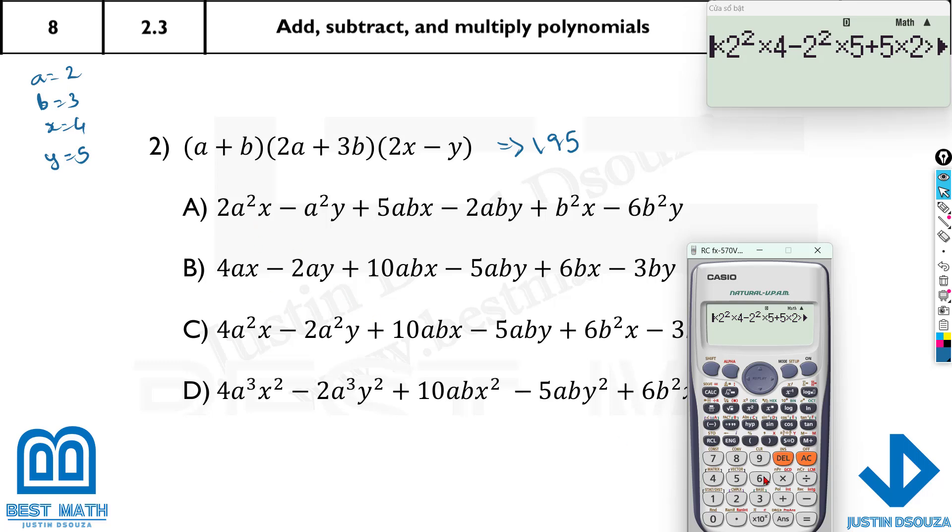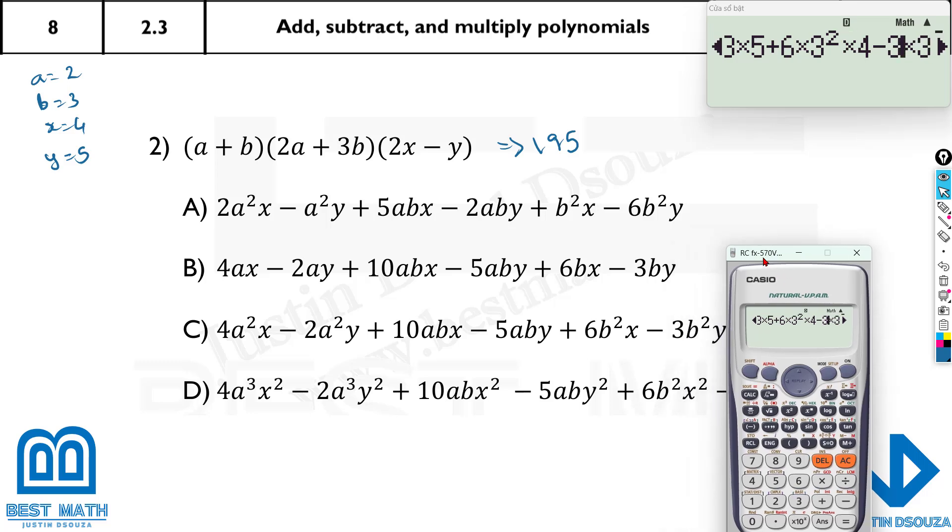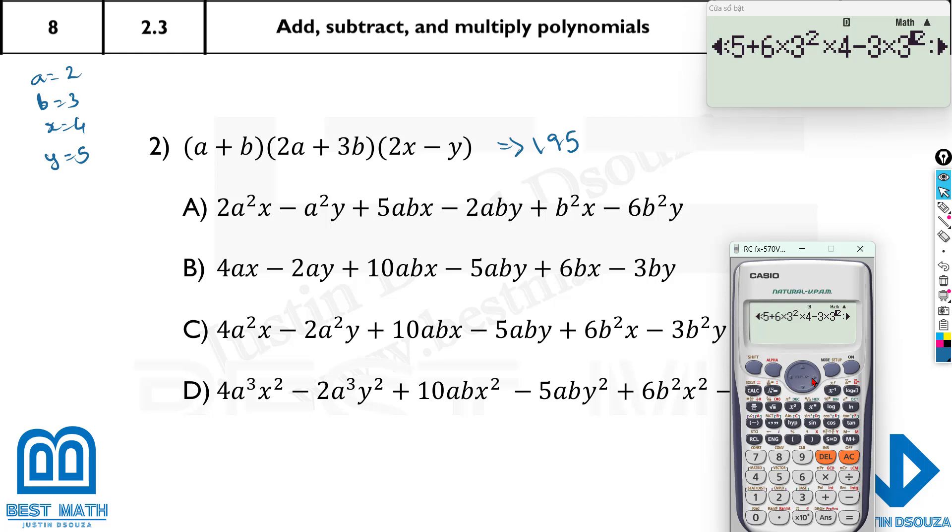So I'll just do it for the last one. It is a squared x. That's 4a squared x minus 2 times a squared is 2 squared times y plus 10 times a times a times b times x minus 5 times, that's not 2, it should be 5 times a, b and y, that's correct, plus over here it'll be 6, 6 times b squared times x minus, this is not 6, it's 3, b squared and y. Okay, this should be 195. Yes, this is the correct answer.